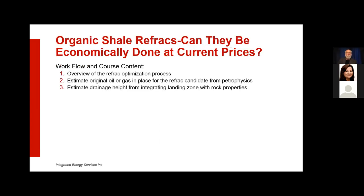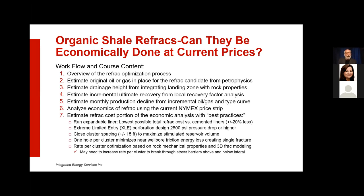Here's the workflow we recommend. Basically: how much is there to start with — what's your drainage height, rock properties? Come up with a EUR with new maximum SRV completions, and the difference between that and your current number gives you the EUR for the refrac. Use a type curve for the area, decline by month percentage, allocate monthly production, iterate on IP using goal seek in Excel. For execution: expandable liner, extreme limited entry, close cluster spacing, one hole per cluster, max rate optimization, and frac optimization within the cluster.